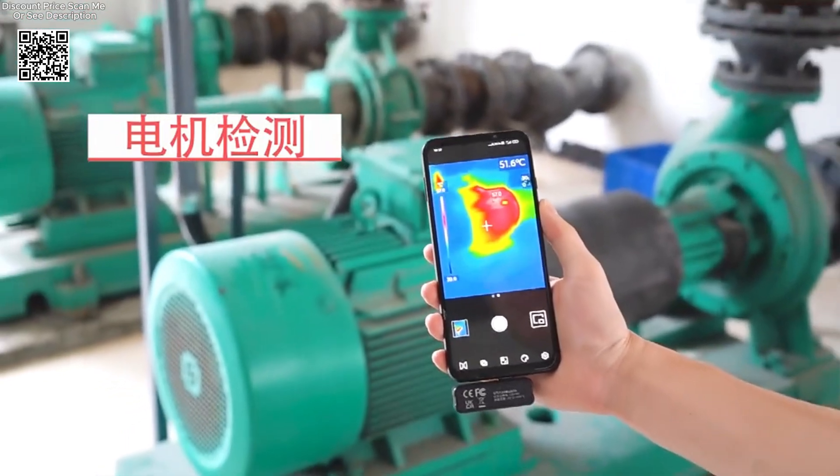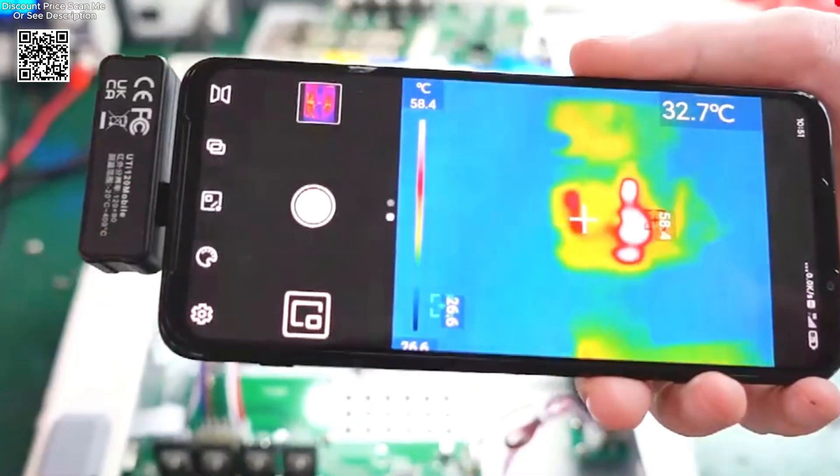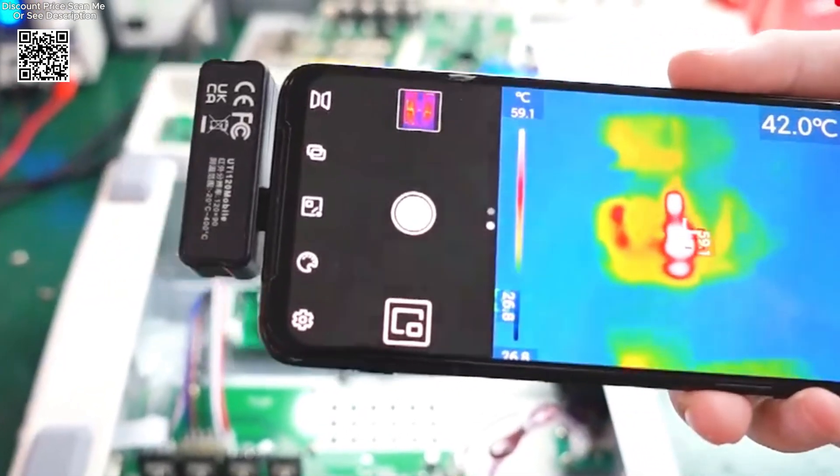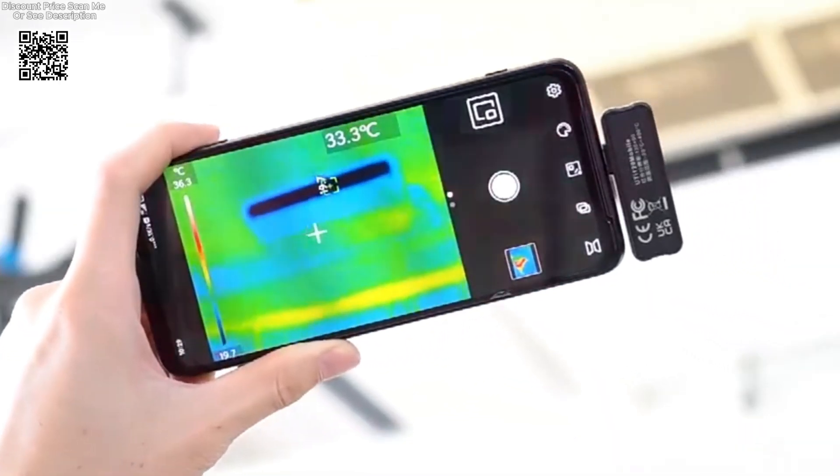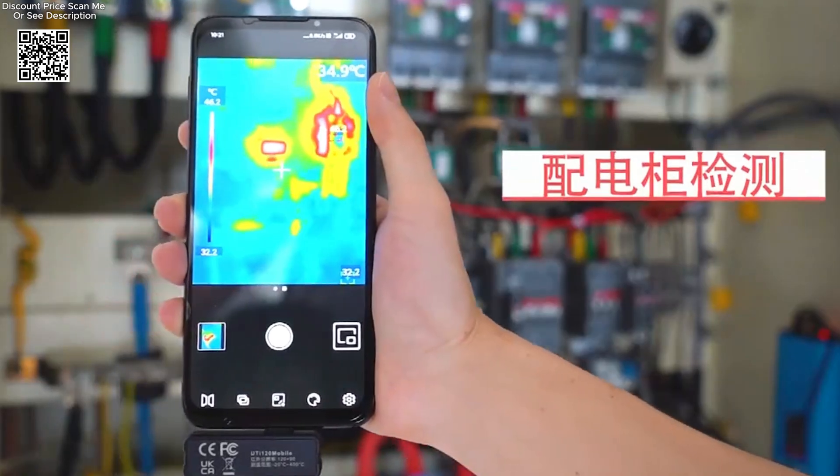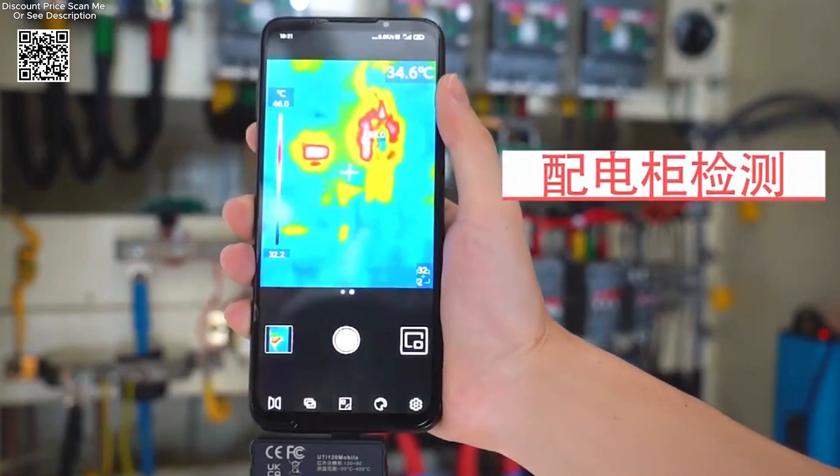The versatility of the UTI-120MS and UTI-120 mobile extends beyond mere cell phone diagnostics. It excels in inspecting switchboards, identifying electrical system anomalies, and uncovering hidden heat sources indoors and outdoors.